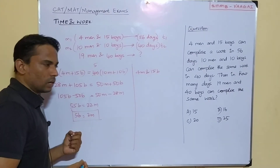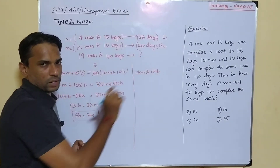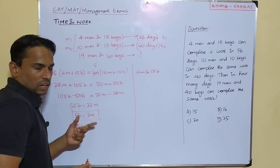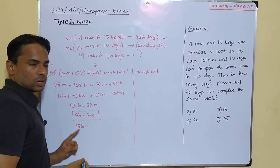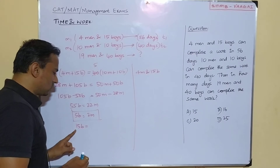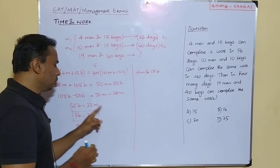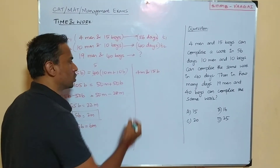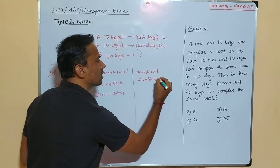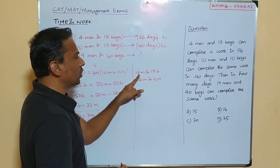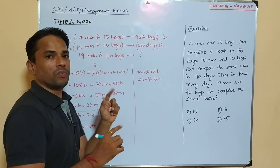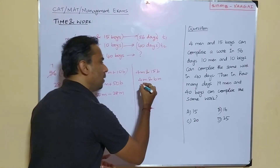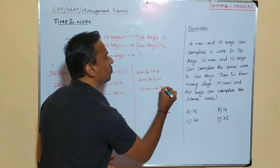We know 5 boys = 2 men. For 15 boys: 5 × 3 = 15, so the same factor applies to the right side: 2 × 3 = 6 men. So 15 boys becomes 6 men. The first team is now 4 men + 6 men = 10 men. Therefore, 10 men can complete the work in 56 days.